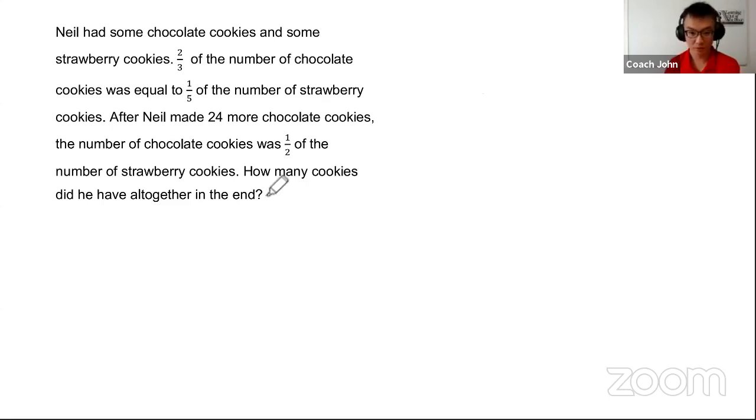So here goes. Neil had some chocolate cookies and some strawberry cookies. Two-thirds of the number of chocolate cookies was equal to one-fifth of the number of strawberry cookies. Are you able to see a problem some type here? Or before that, are you able to tell me out of this whole sentence, from two-thirds to cookies here, which is the most important keyword?